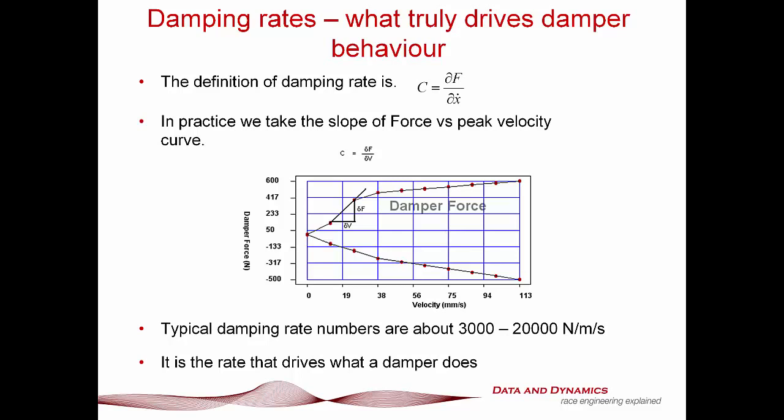In terms of quantifying this, your typical racing damping rate numbers will go anywhere between about 3,000 Newtons per meter per second through to 20,000 Newtons per meter per second. To my North American colleagues: I don't say that solely as part of my ongoing campaign to convert North America from imperial to metric units. I do it for a very clear reason — it makes quantifying and non-dimensionalizing what we do with a damper so much easier when done in metric.